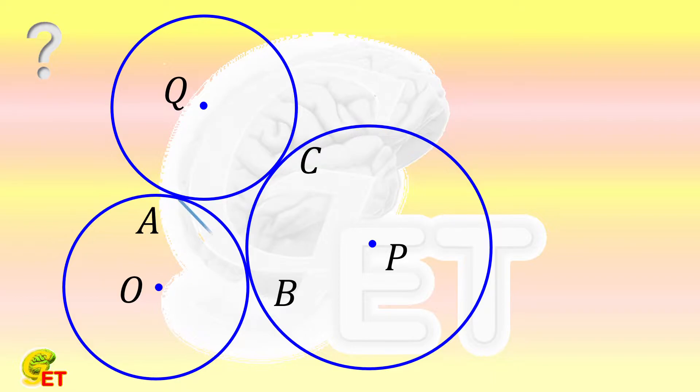We connect the three tangent points and extend one of them, BC, to intersect circle Q at point D. Can you prove that AB and AD are perpendicular to each other? Why not give a try, and we will come back soon.